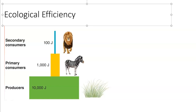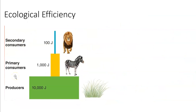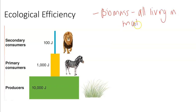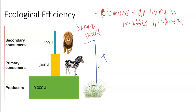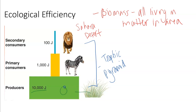Gross primary productivity and net primary productivity were really just about how much energy the plants have, but ecological efficiency is how much energy the entire ecosystem has. You study this through looking at the biomass, which is just all living matter in an area. We can look at this in something called a trophic pyramid. Trophic levels and pyramids are very simple — each different organism is in a different trophic level because they use certain amounts of energy and based on what they eat. If you look at our graph, we start with 10,000 joules of energy from the plants.